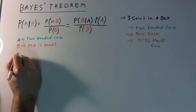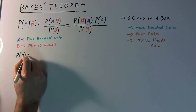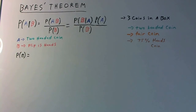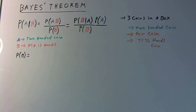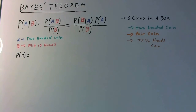What's the probability that a flip is heads? Forget everything else — forget the given. We have three coins in the box, and we assume equal probability of picking any one of those three. So it could be either the two-headed coin, or the fair coin, or the 75% heads biased coin.